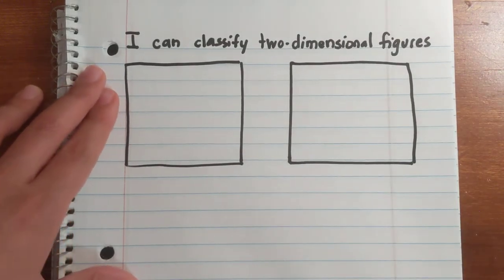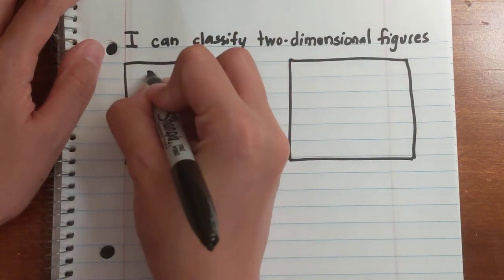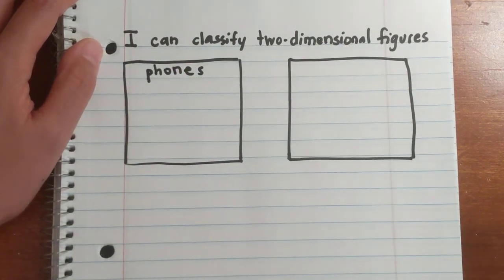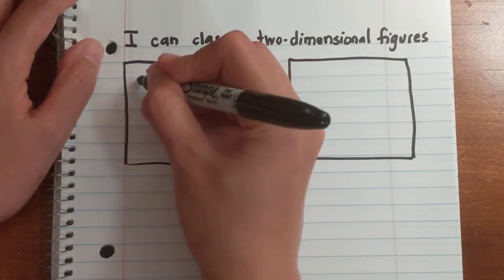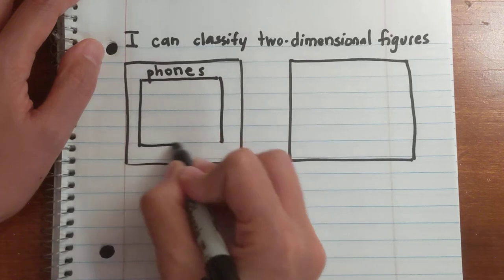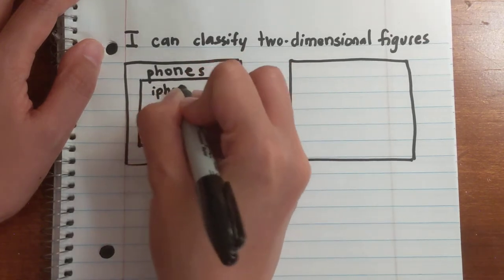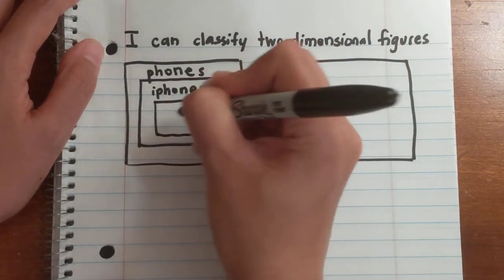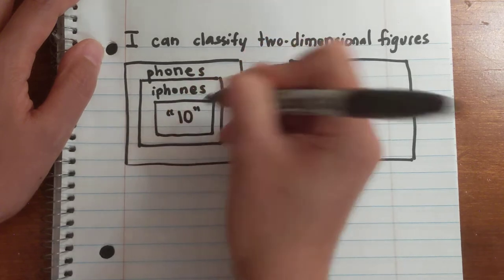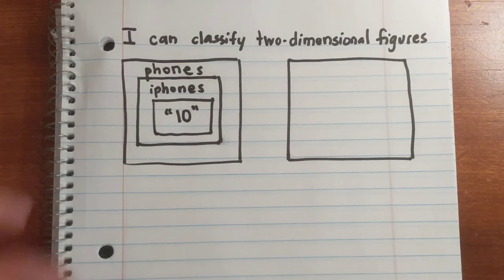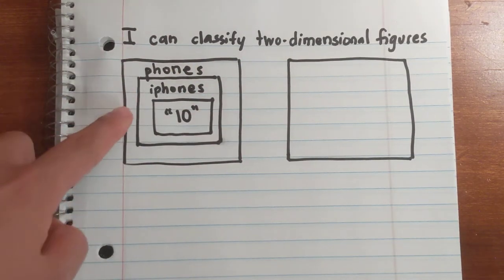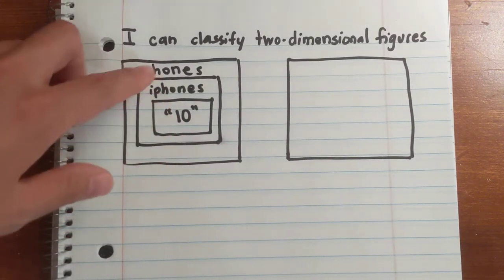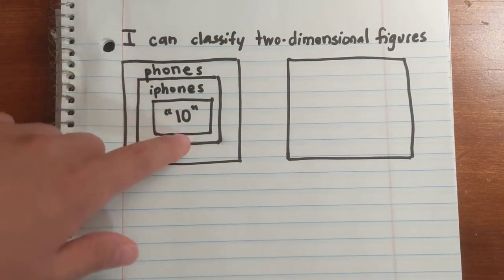We're going to start with an analogy. Let's think of categories — let's think of phones. There are many different kinds of phones. Let's be more specific: within the category of phones, we can think of iPhones. Let's get even more specific and talk about a model: the iPhone 10. The most specific is the iPhone 10, less specific is just iPhones, and the least specific is just phones. The category is phones; the subcategories are iPhones and iPhone 10.